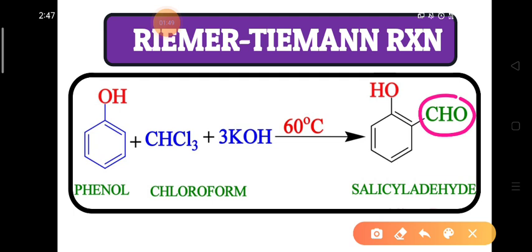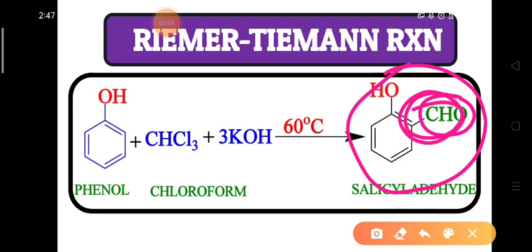The formyl group is substituted at the ortho position to the hydroxy group of phenol, and the name of this compound is salicylaldehyde. Such substitution of the formyl group is known as the Reimer-Tiemann reaction, carried out with chloroform. Formylation can also be achieved with other reactants like N,N-dimethylformamide, but that reaction is known as the Vilsmeier-Haack reaction.